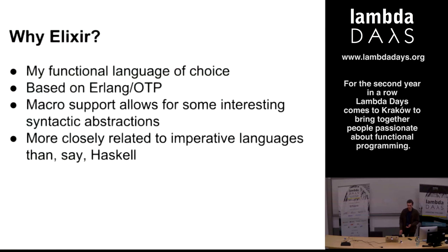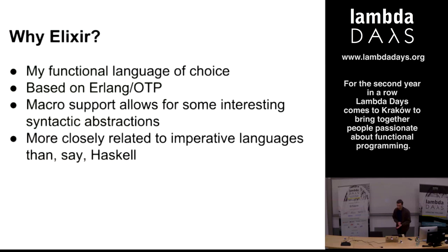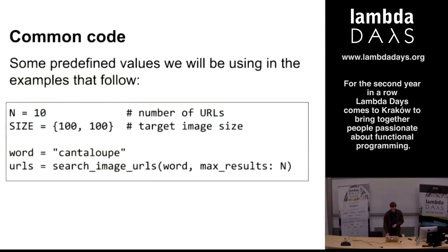Just a few words about why I'm using Elixir — simply because it's the functional language I'm most comfortable with. It is implemented on top of the Erlang OTP system — basically Erlang VM, Erlang libraries, and OTP principles, with the Erlang language replaced by Elixir and its core library. Elixir also supports macros, which allow us to transform syntax or define new constructs in the language. We will use that to come up with a nice notation for our I.O. code.